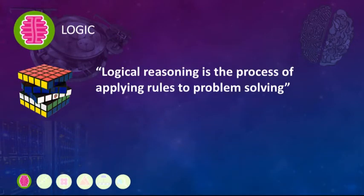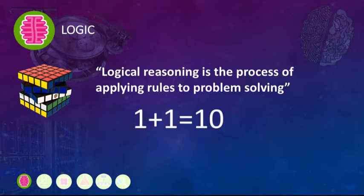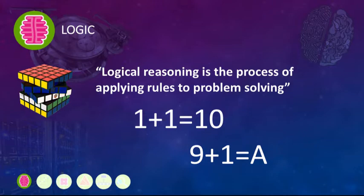Start with some logic. Logical reasoning is the process of applying rules to problem-solving. Just about everything in mathematics is a logic problem, but there are many other logic problems — Rubik's cubes, whatever you can think of. Sometimes it's the most obscure, but it can solve many real-world problems if you apply the right set of rules. Like 1 plus 1 clearly equals 10 — well, it does if you're doing binary. And of course 9 plus 1 definitely equals A — well, it does if you're using hexadecimal.